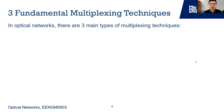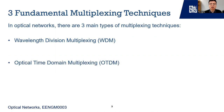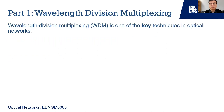In optical networks, there are three fundamental multiplexing techniques: wavelength division multiplexing, or WDM; optical time domain multiplexing, or OTDM; and the last one, spatial division multiplexing, which is also known as SDM. Let's look at the WDM system first.